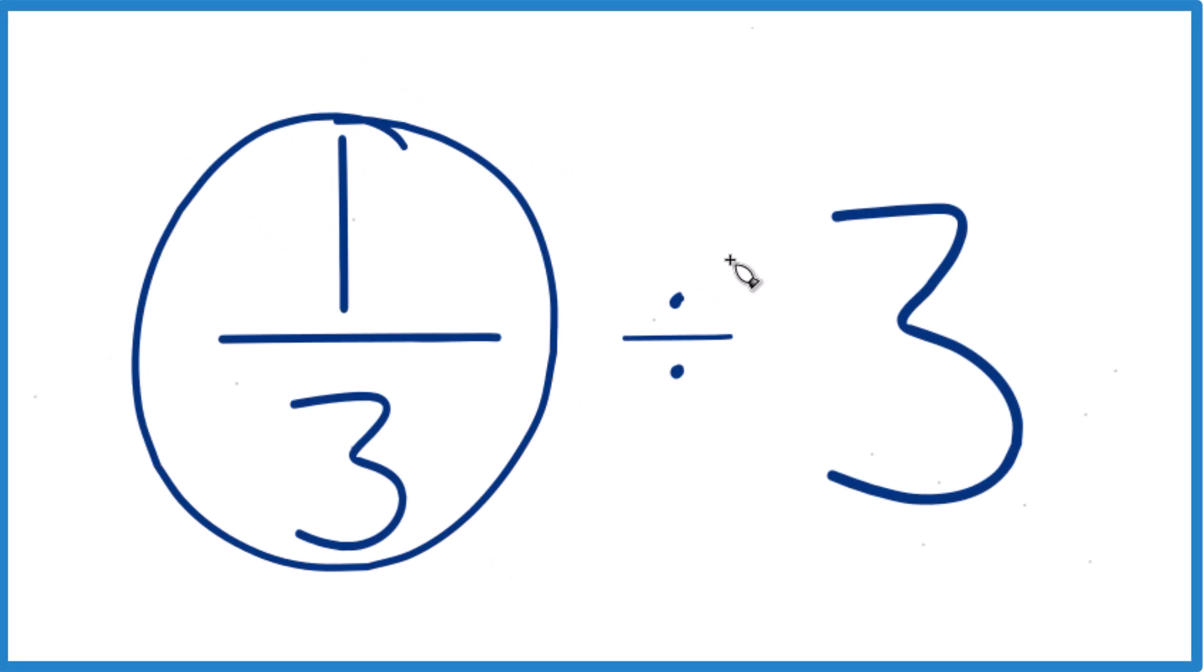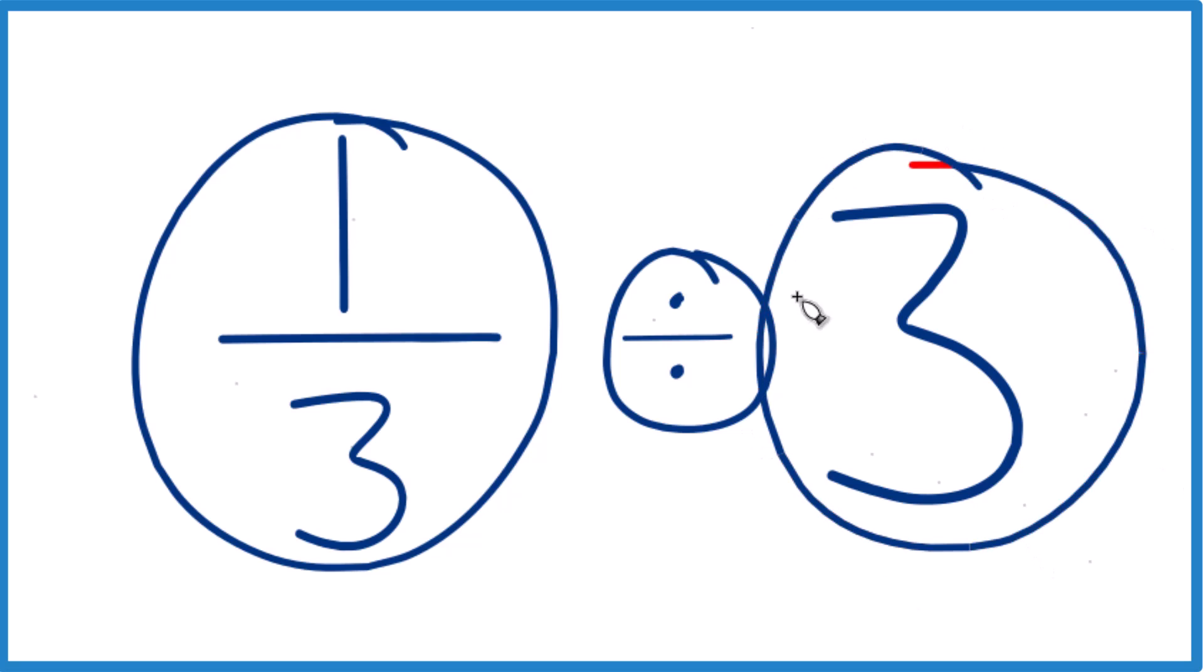If you need to divide one-third, so one-third divided by three, here's how you can do it.